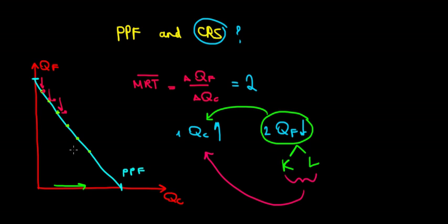And this will hold constantly for the entire PPF. That's why when we have a constant returns to scale function, we will have a linear production possibilities frontier. Hope this makes sense. And we are done.